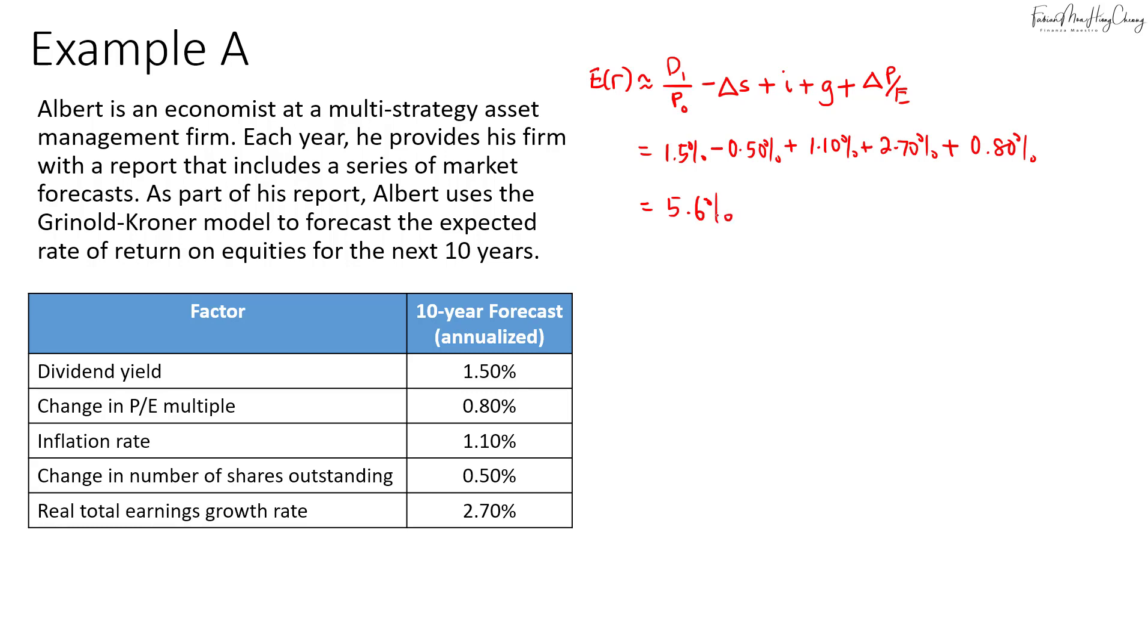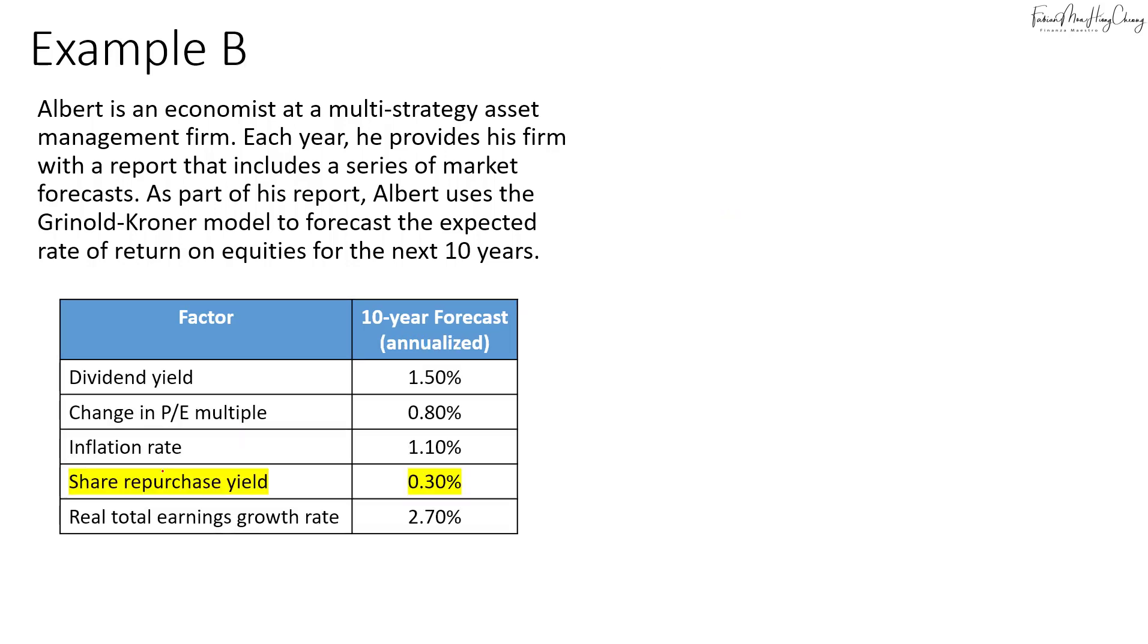Now let's look at another variation. What if we were given the share repurchase yield instead of the change in the number of shares outstanding, 0.3%? In this case, share repurchase yield means the company purchased shares back from shareholders. Therefore, it results in a positive return.